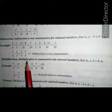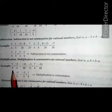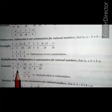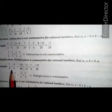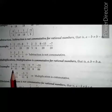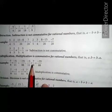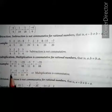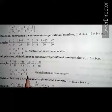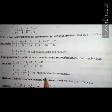Next, multiplication: multiplication is commutative for rational numbers. That is, a multiplied by b equals to b multiplied by a. For example, let a equals to 7 upon 8 and b equals to minus 5 upon 11. So a multiplied by b equals to minus 35 upon 88. On interchanging their places, b multiplied by a — that is minus 5 upon 11 multiplied by 7 upon 8 — also equals to minus 35 upon 88. Both are equal, so multiplication is commutative.